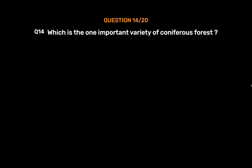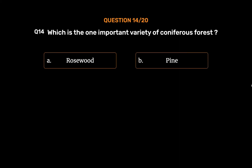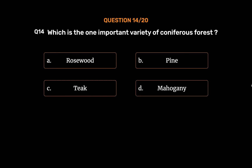Question number 14: Which is one important variety of coniferous forest? Option A: Rosewood. Option B: Pine. Option C: Teak. Option D: Mahogany. The correct answer is Option B: Pine. Pine is one important variety of trees in coniferous forests.